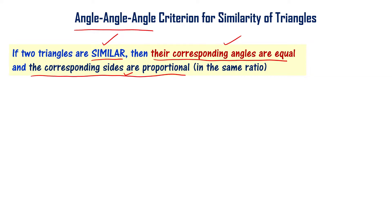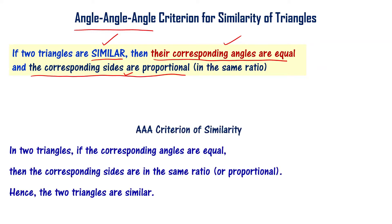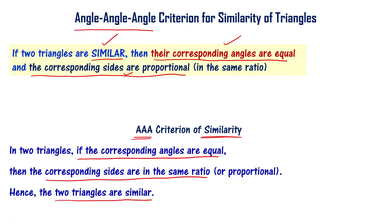This is the Triple-A criterion for similarity of triangles — the Angle-Angle-Angle criterion. In two triangles, if the corresponding angles are equal, then the corresponding sides are in the same ratio, and hence the two triangles are similar. If corresponding angles of two triangles are equal, then automatically the corresponding sides are in the same ratio.